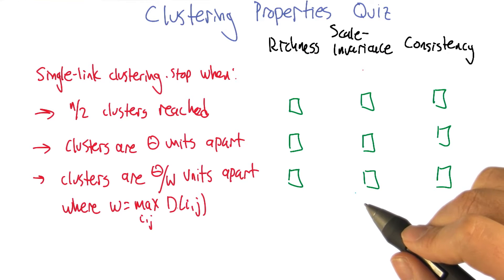All right, Charles, let's see what you think. The first one says we want to have a fixed number of clusters. Well, actually, the first thing I'll note about that is since we're going to have a fixed number of clusters, it doesn't have the richness property.